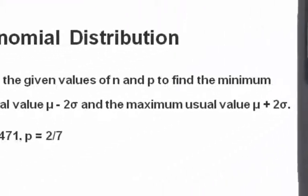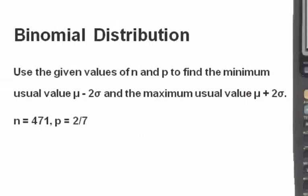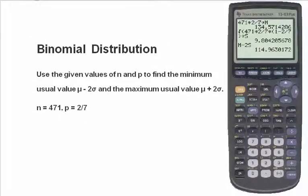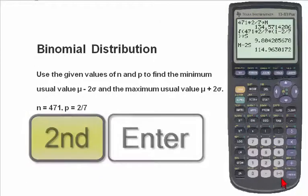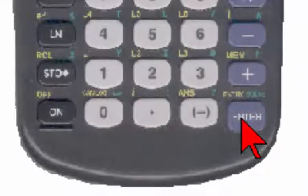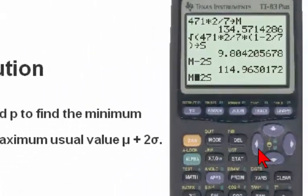To find the maximum usual value, we'll use the same equation. The only difference is the minus sign will be replaced by a plus sign. A quick and easy way to do that is to use the second enter button, the yellow second key, and then the entry above the enter key. This is the last entry, which I can now edit by using the left arrow, going back to the minus sign, and replacing it by a plus sign, and now hitting enter.